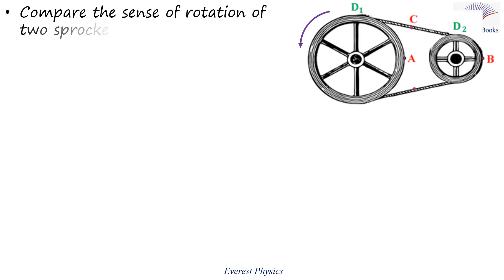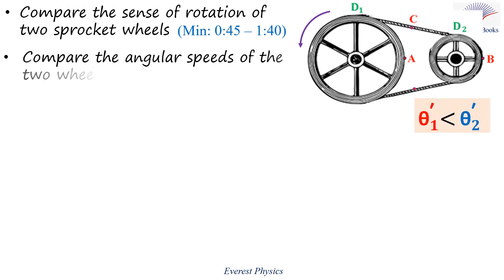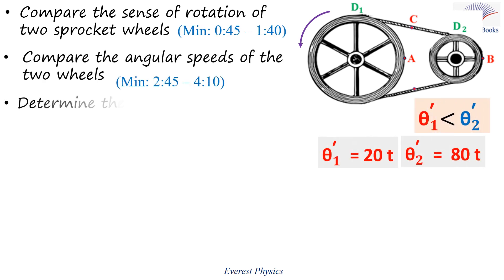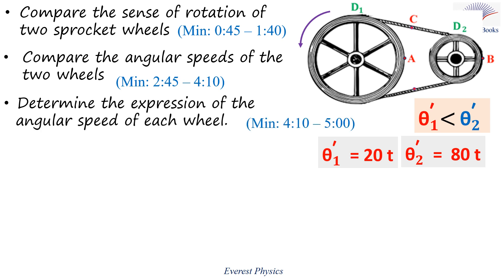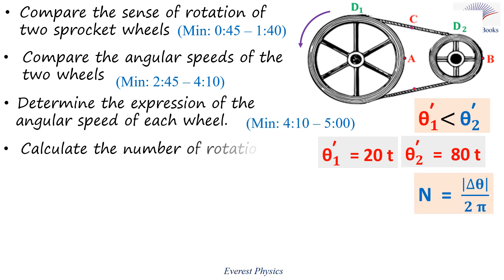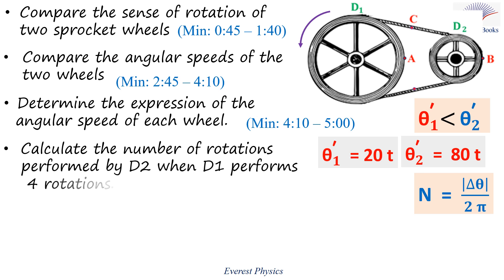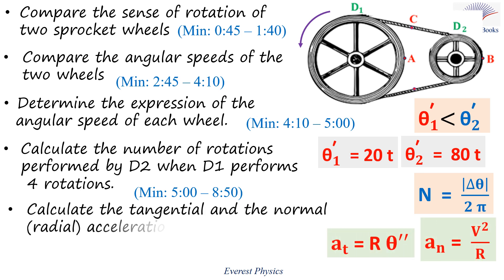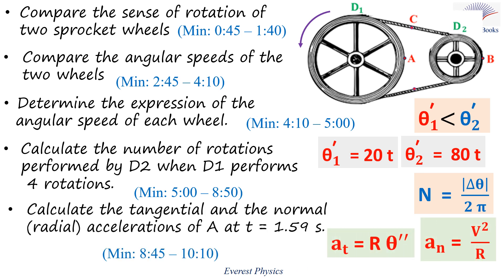In this exercise, we are going to compare the sense of rotation of two sprocket wheels, compare the angular speeds of the two wheels, determine the expression of the angular speed of each wheel, calculate the number of rotations performed by wheel D2 when wheel D1 performs four rotations, and calculate the tangential and the normal or radial accelerations of point A on wheel D1 at time 1.59 seconds.